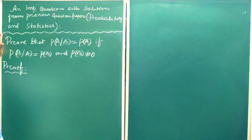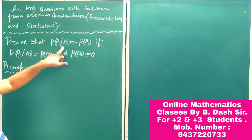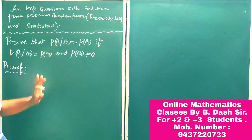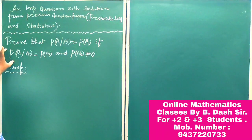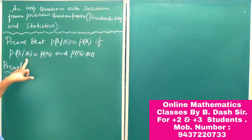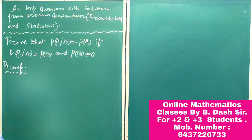The question is: prove that the conditional probability of A when B occurs is equal to P of A. It is given that the conditional probability of B when A occurs is equal to P of B, and P of B is not equal to 0.